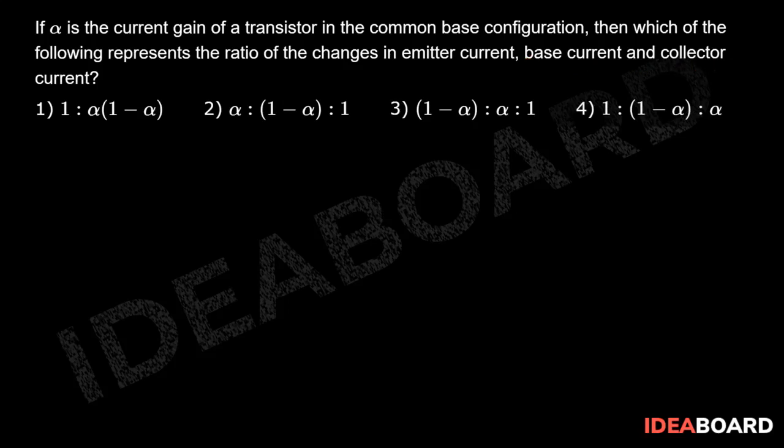So we know that alpha is equal to Delta I C divided by Delta I E, so that can be written as Delta I E minus Delta I B divided by Delta I E.